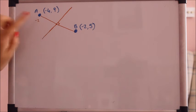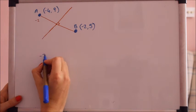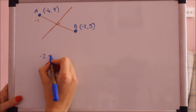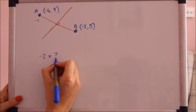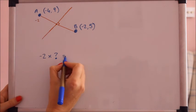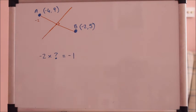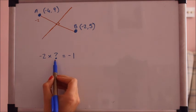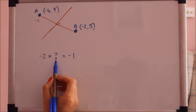We know this gradient here is minus 2. Now if you times that by the perpendicular gradient you'll always get minus 1. Perpendicular gradients times to give minus 1. Now you might be able to work out what this gradient is just by looking at it. If not,